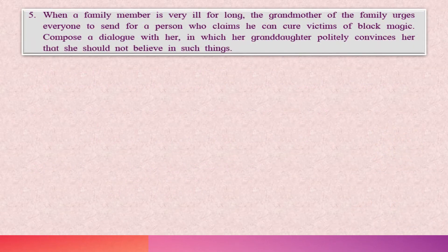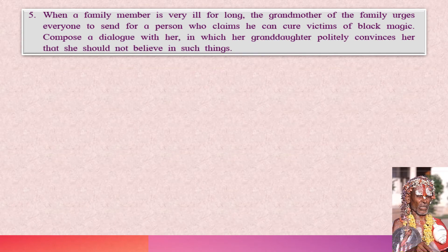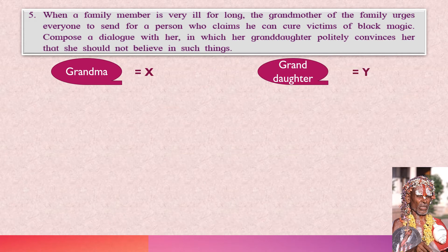Next question: When a family member is ill for long, the grandmother of the family urges someone to send for a person who claims he can cure victims of black magic. Compose a dialogue in which her granddaughter politely convinces her that she should not believe in such things. The grandmother is a traditional person and the granddaughter believes more in scientific proof than black magic. The grandmother is represented as X and the granddaughter as Y.